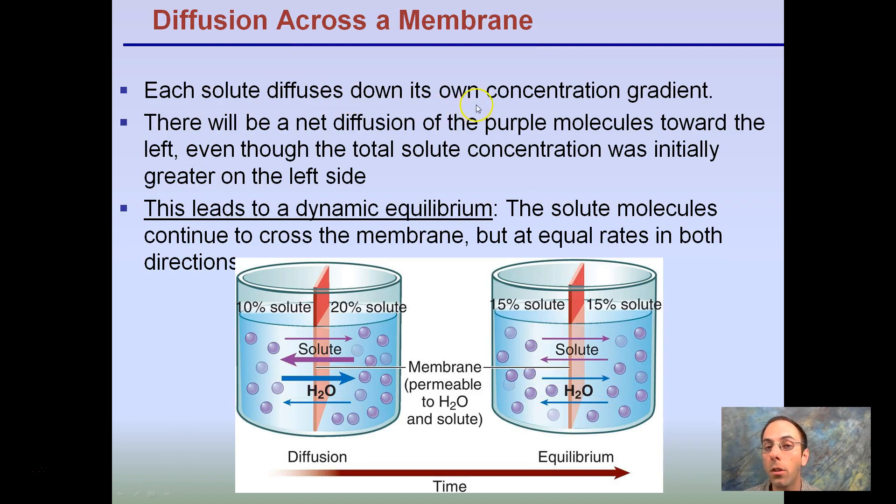So, diffusion across the membrane. Each solute diffuses down its own concentration gradient. There will be a net diffusion of purple molecules towards the left. You can see they're moving towards the left through the solute that was initially greater on the left side. So, here we have 20% solute, 10% solute. You can see the movement. In this case, it's going to be moving to the left. This leads to dynamic equilibrium. The solute molecules continue to cross the membrane, but at equal rates in both directions. So, at equilibrium, I don't want you to think things stop moving. The molecules are still moving, but for every one that moves to the left, one moves to the right. So, there's no net change. This is dynamic equilibrium.